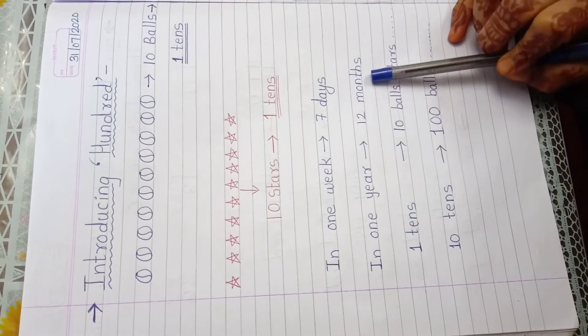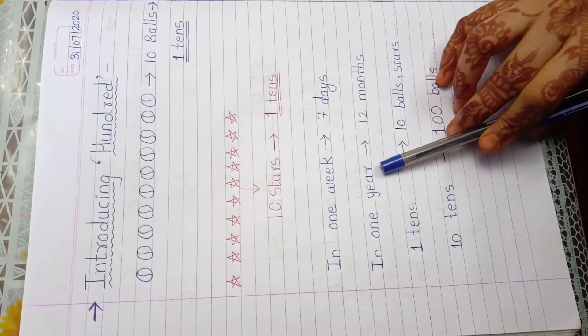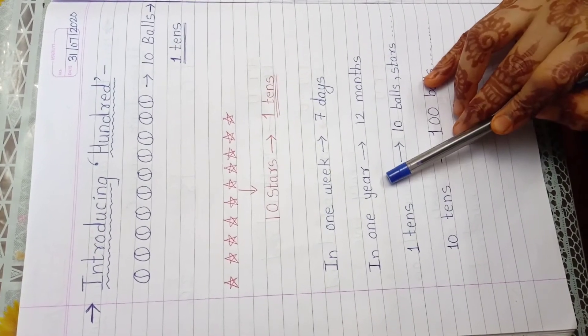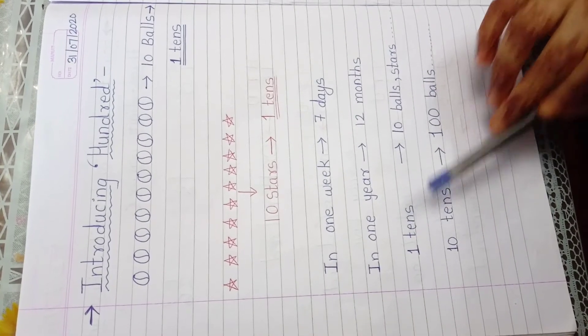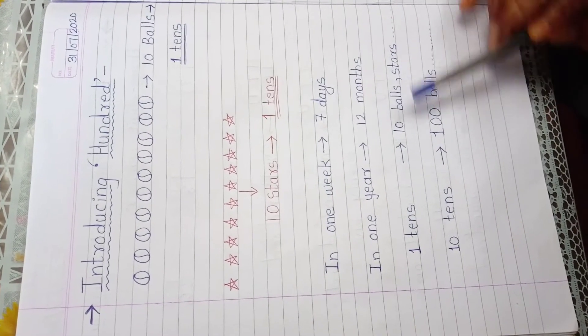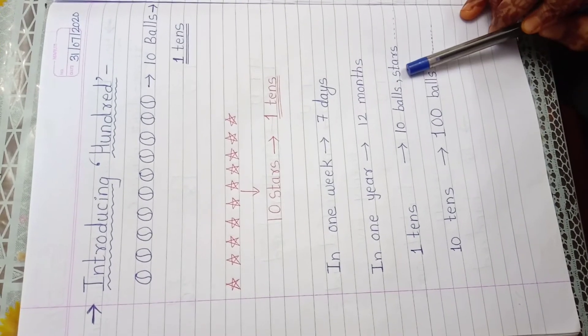Now 12 months is equal to 1 year. Okay. Means in 1 year, how many months? 12 months. So like that in 1 tens, how many balls or how many stars? 10 stars. 10 stars or 10 balls. Understand?